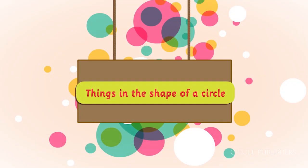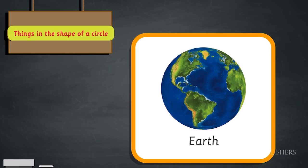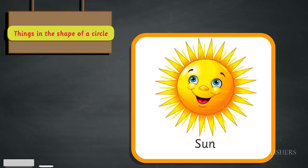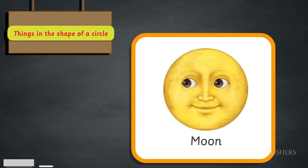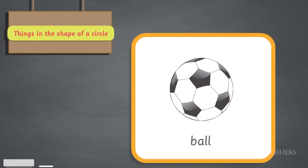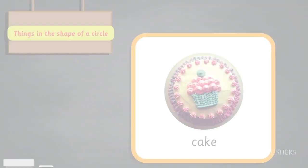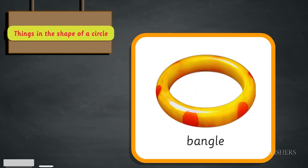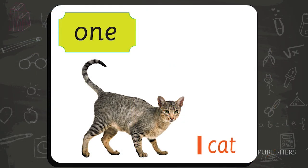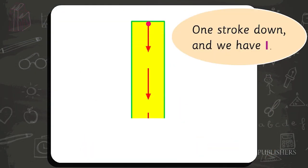Things in the shape of a circle: Earth, Sun, Wheel, Clock, Moon, Ball, Cake, Bangle. One — one stroke down and we have one.